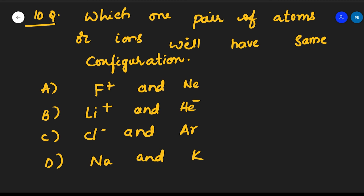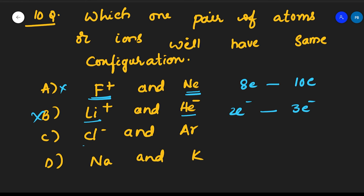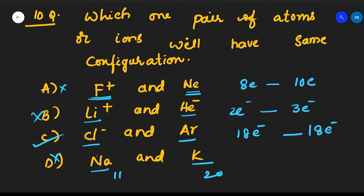F⁻ has 10 electrons and Ne has 10, but F⁺ is different. Li⁺ has 2 electrons while He⁻ has 3 — wrong. Cl⁻ gains one electron, giving 18 electrons, and Ar also has 18 electrons — same configuration. Na has 11 and K has 20 — wrong. Option C, Cl⁻ and Ar, is the correct answer.